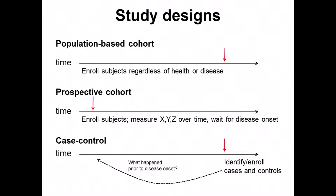In a case-control design, when there's a specific disease to study, you ascertain the cases and ascertain the controls, enroll them, and think about what happened prior to disease onset. With a genetic-based study, we're asking what genetic variants are associated with the difference between the cases and the controls.